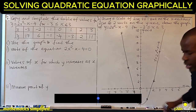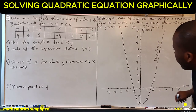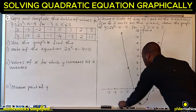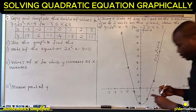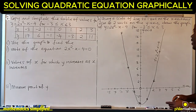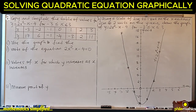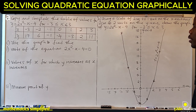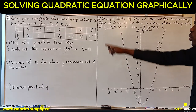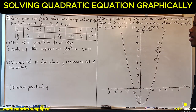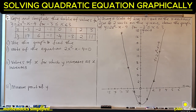This is the graph. The question we want to answer is: find the roots of the equation 2x squared minus x minus 4 equals 0.